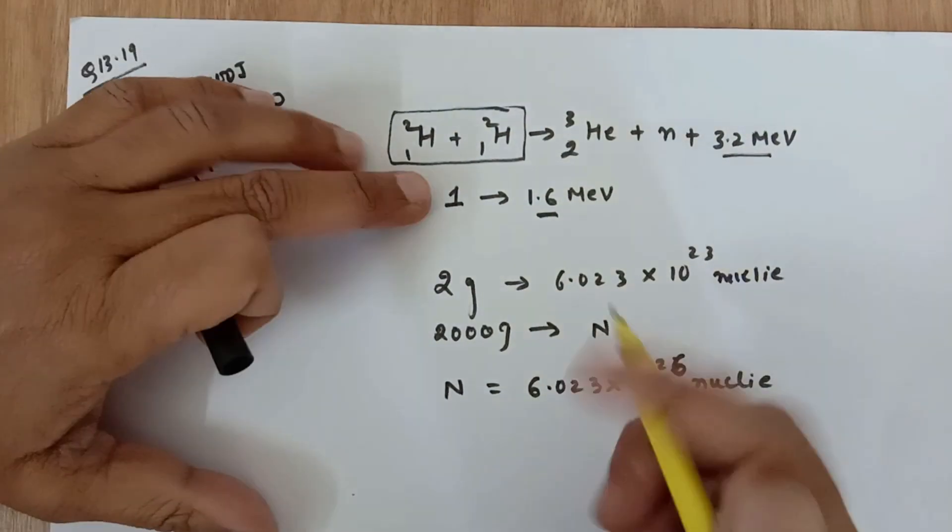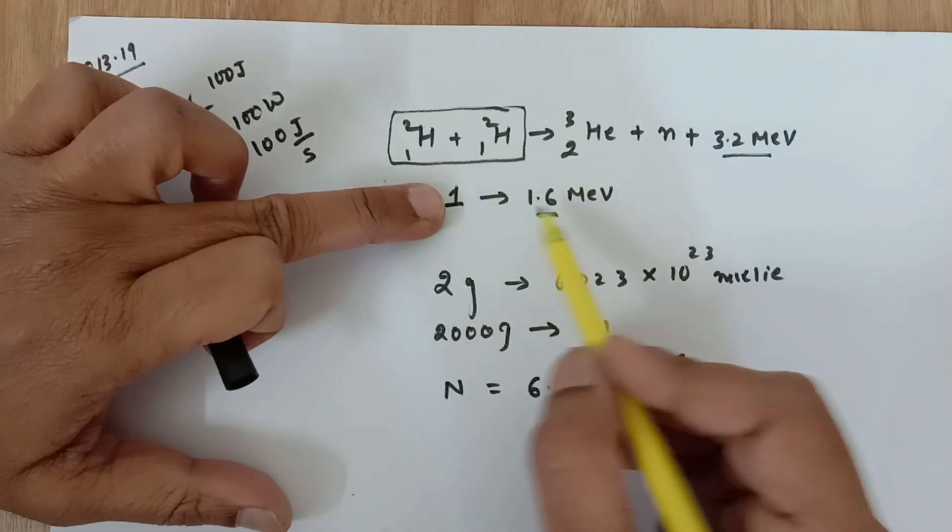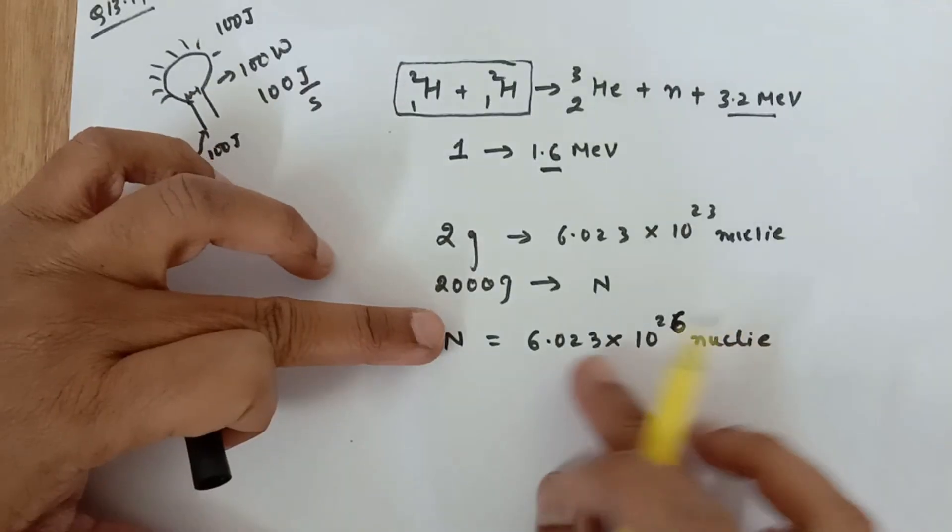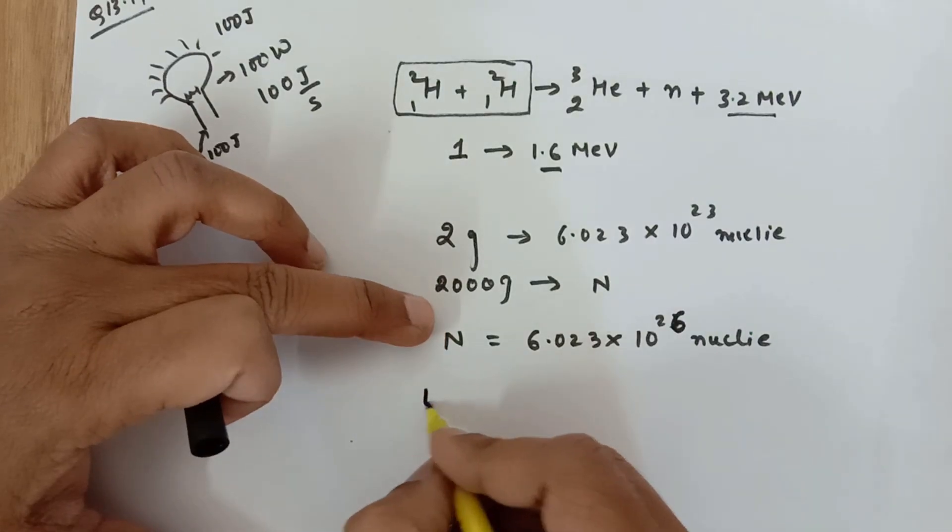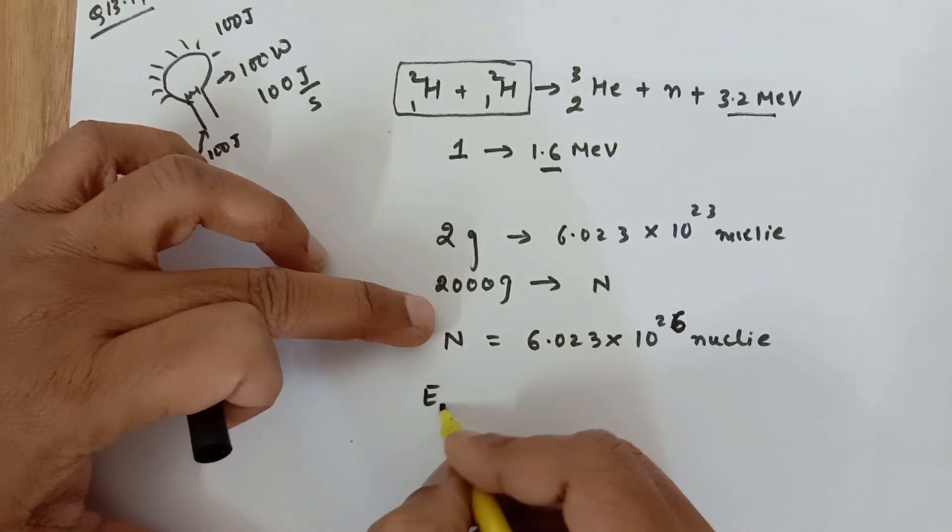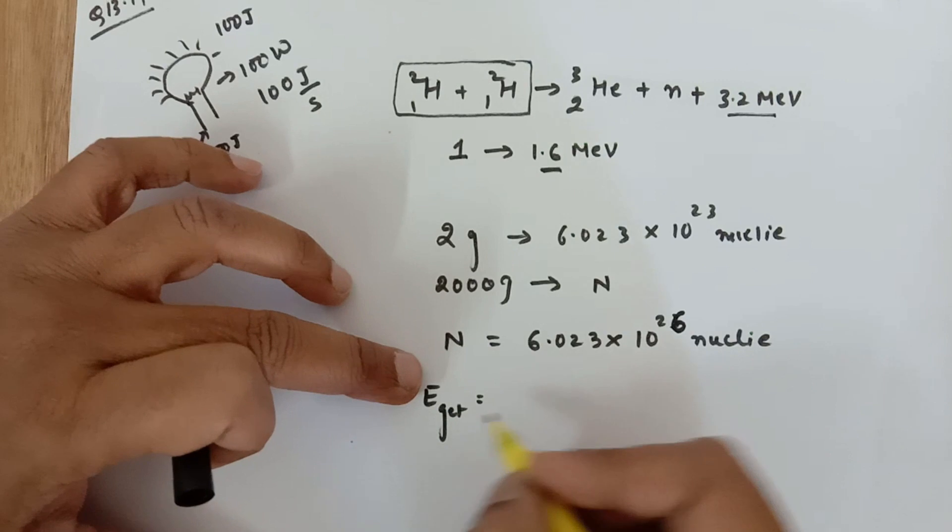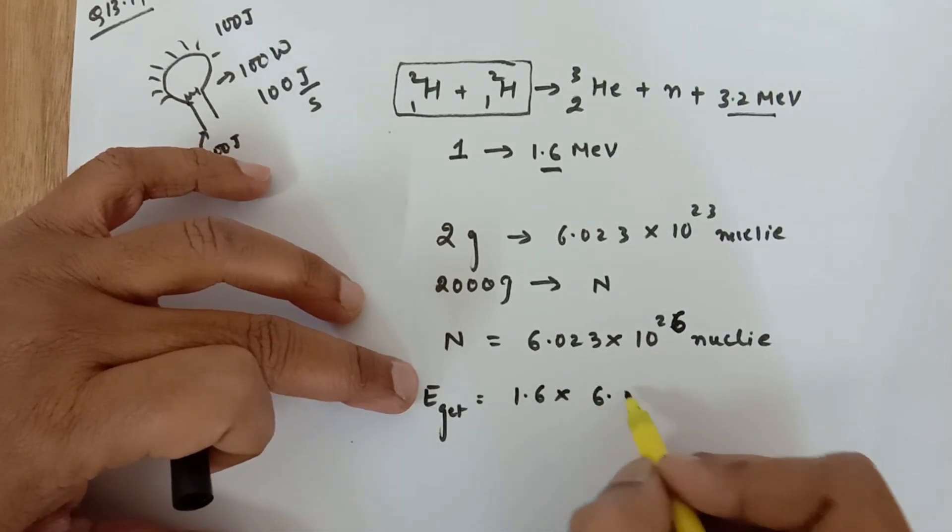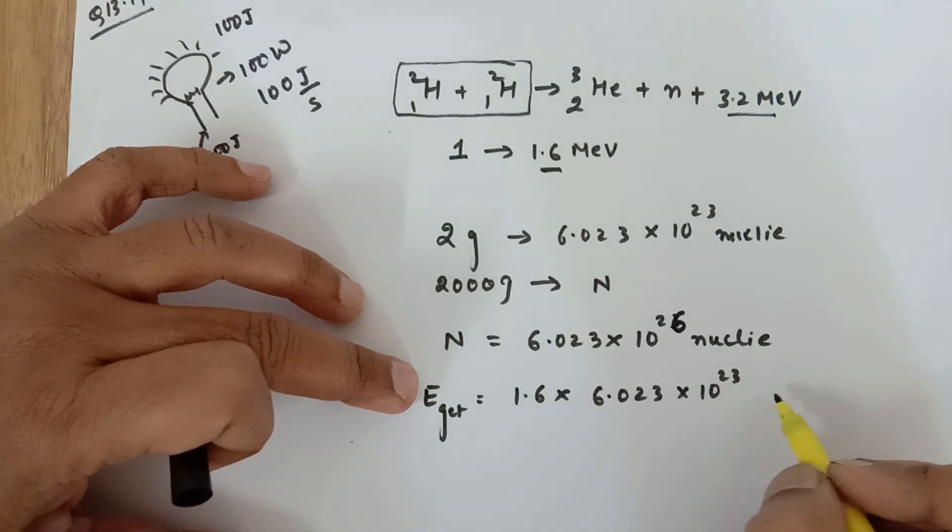Now when one nuclei is getting used up, we get this much amount of energy. We have these many nuclei, so the amount of energy that we are going to get is 1.6×6.023×10^23.